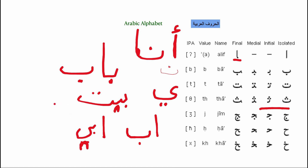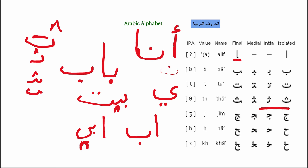For 'abby' — my father — you write alif, ba, ya. Now let's look at the letter ta. Ta has the same shape as ba but with two dots on top. You can start a word with it, place it in the middle, or end a word with it — the forms are similar to ba, just with two dots on top.